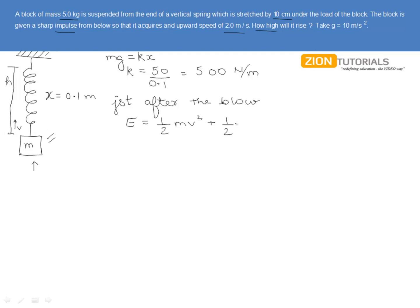plus half kx squared, where x is the initial extension to balance the full weight of this block m. Now let us also frame an expression for the energy at the height h, or at point B.